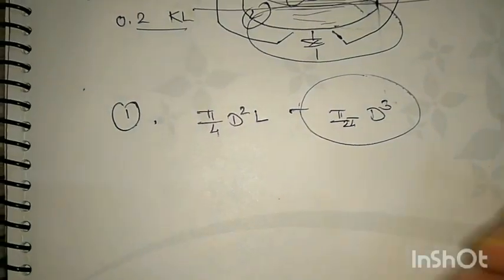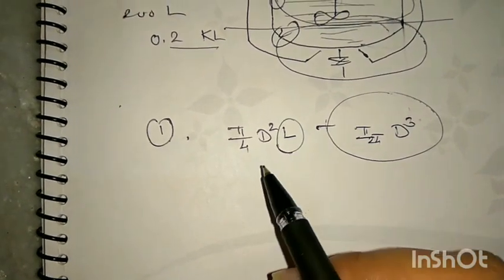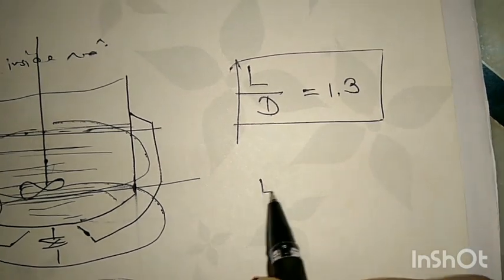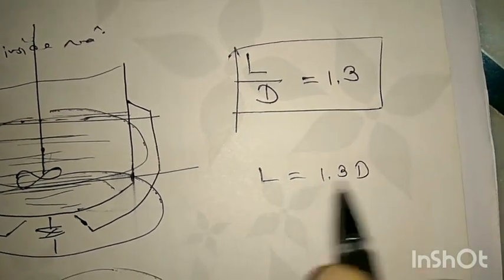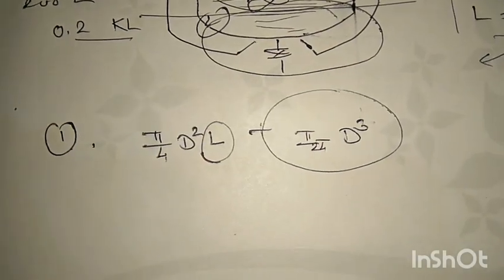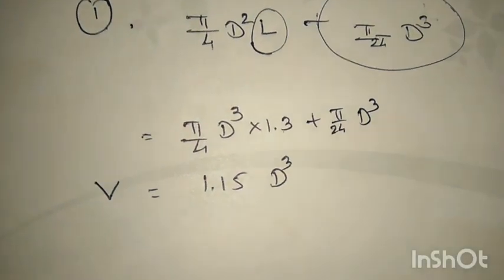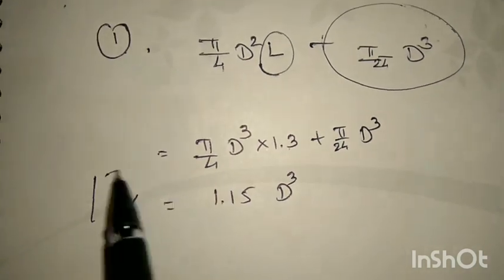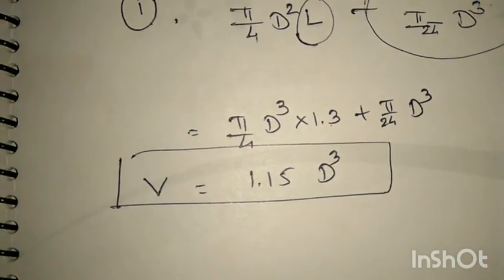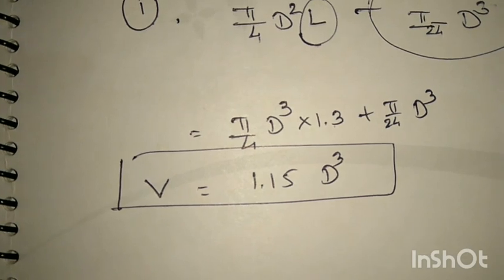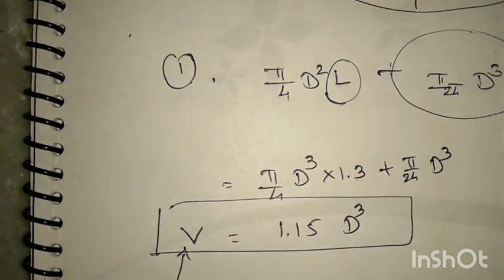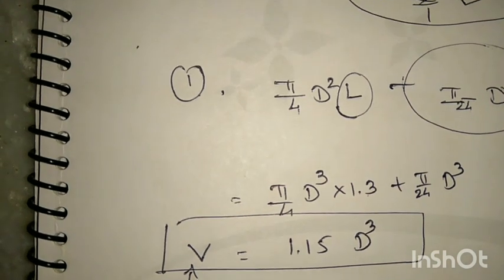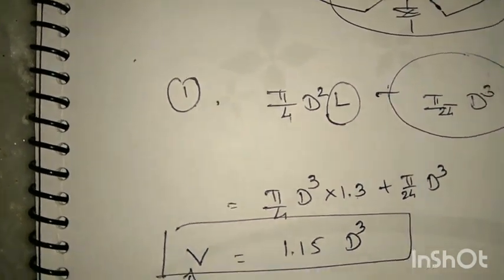Since L/D = 1.3, we have L = 1.3 × D. Substituting this into the volume equation and resolving, the total volume becomes V = 1.15 × D³. Now, since V = 0.2 KL, we can calculate D, and from D we can calculate L very easily.